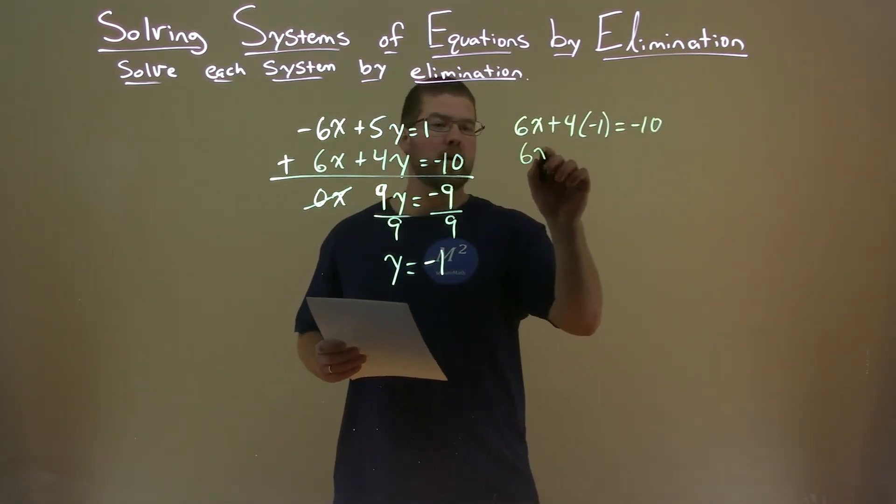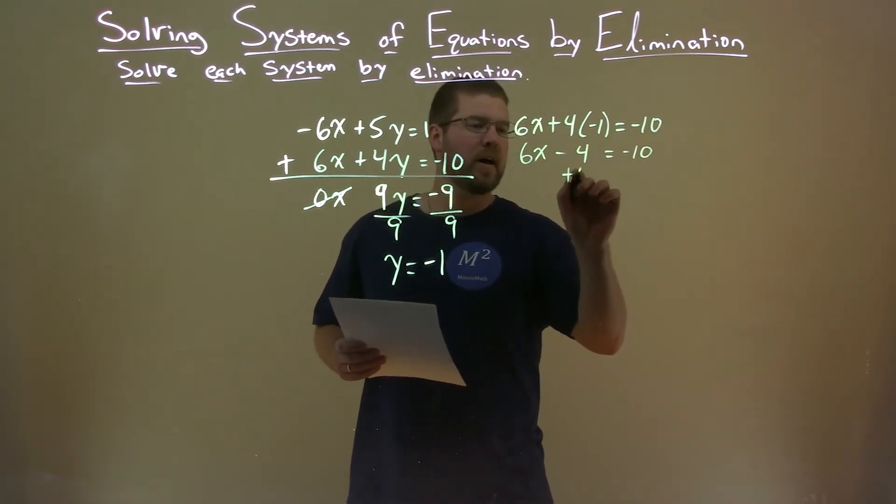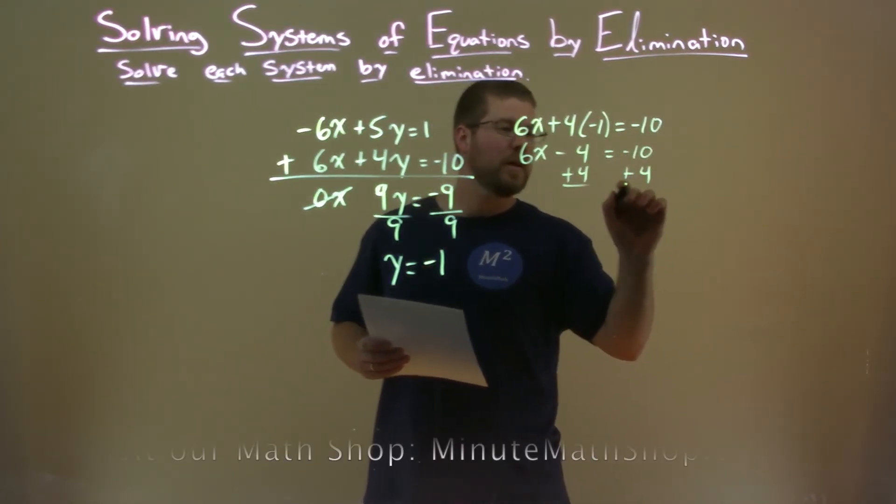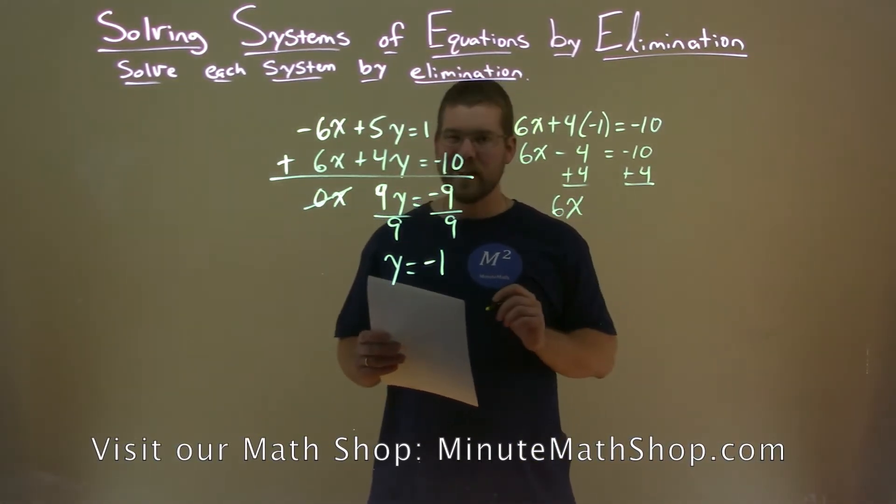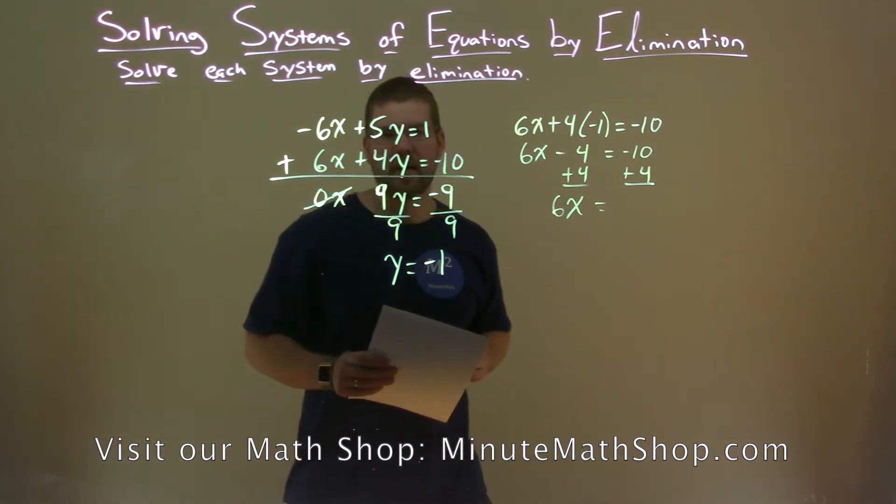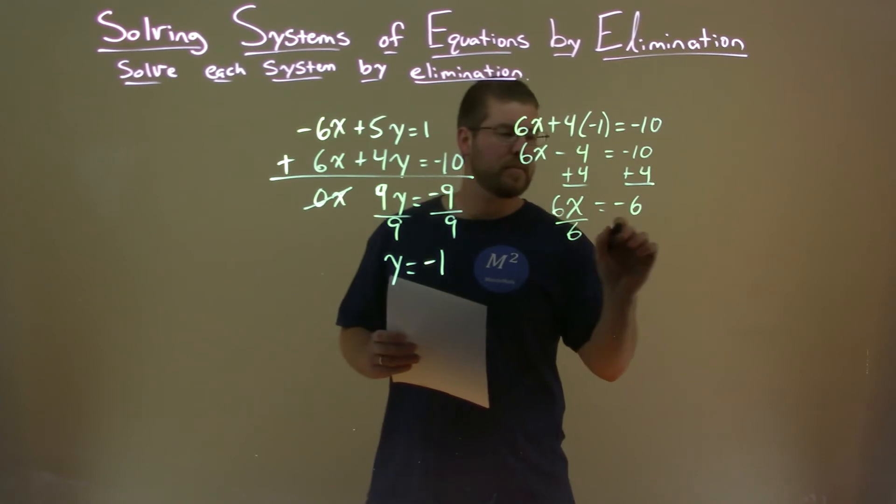4 times negative 1, well, you should know that. That's negative 4. Add 4 to both sides. Get us one step closer to x by itself. We have 6x here by itself. And negative 10 plus 4 is negative 6. Divide both sides by 6, and we're pretty much there.